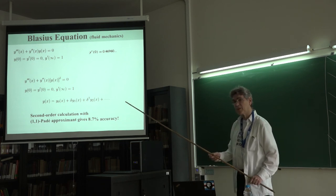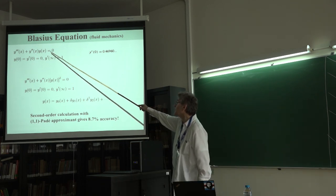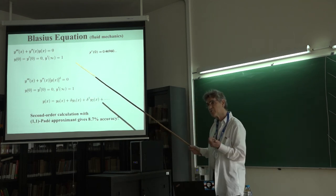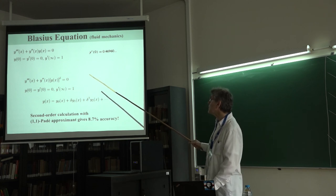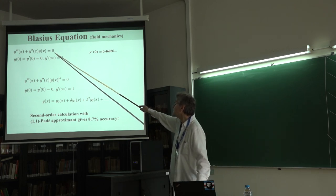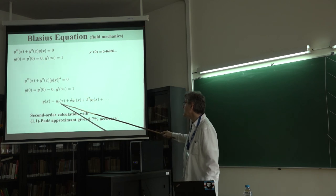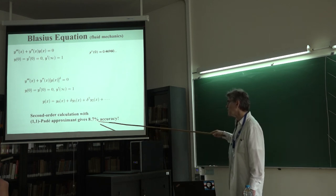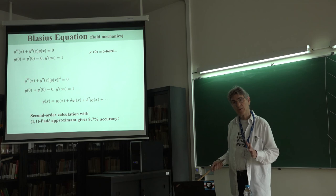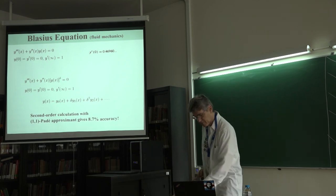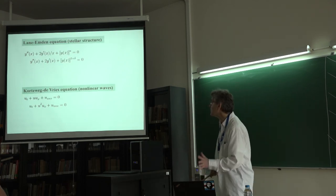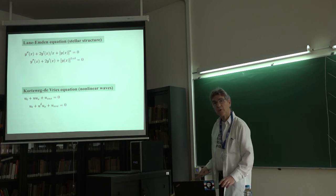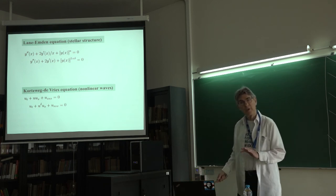You can solve lots of nonlinear equations. For example, if you have to solve the Blasius equation, which describes a boundary layer in fluid flow, you replace this equation by this one, expand in powers of delta, and a 1,1 Padé gives 8.7% accuracy — really good because this is an extremely hard problem. There are lots of other examples: you can solve the Lane-Emden equation, the Korteweg-de Vries equation, and so on. This method seems to be universally good.